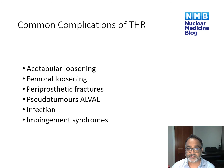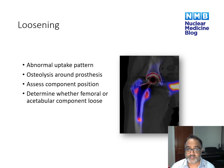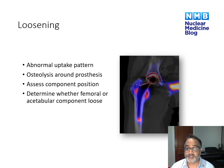Aseptic loosening is the most common complication we're asked to assess on SPECT CT. We expect to see abnormal uptake usually at two points around the femoral neck and one around the tip of the femoral stem. On the CT component, we may see associated osteolysis around the prosthesis where movement is causing that osteolysis. It's very helpful to assess component position as it may provide a clue as to why the component is loose, and it's important to determine whether the femoral or acetabular component is loose, as this will affect surgical management.